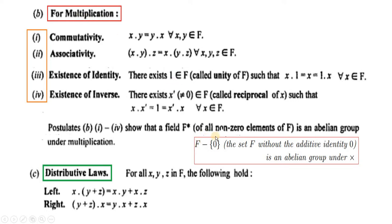Set F میں اگر ہم additive identity zero نکال دیں تو پھر وہ set abelian group under multiplication ہونا چاہیے۔ If we exclude zero from given set F, then that set should be an abelian group under multiplication. These properties will be applicable on non-zero elements of set F, i.e., F minus {0} should be an abelian group under multiplication.